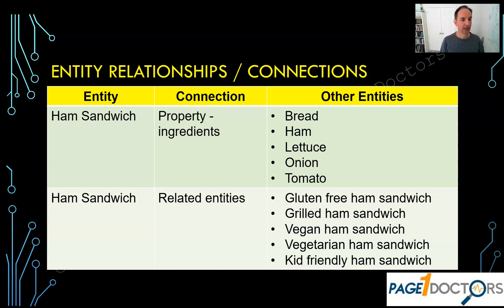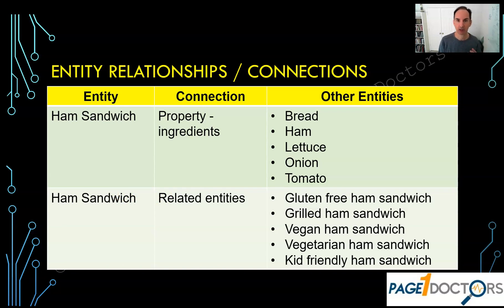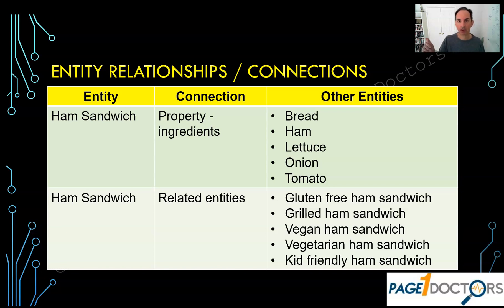Related entities of ham sandwich — or you could say child entities — are gluten-free, grilled ham, vegan, vegetarian, kid-friendly. Pause for a few seconds and look at this slide, because once you get this and start explaining it to other people, you will get it. And you won't be that guy with your head exploding.